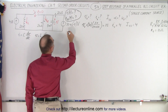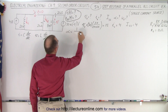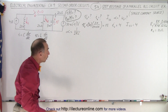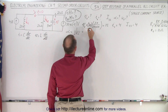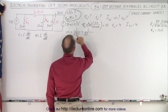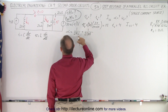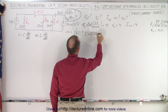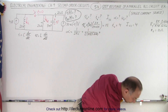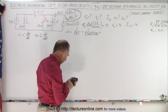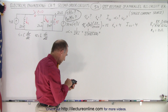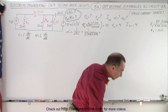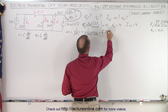Now let's find alpha. Alpha equals 1 over 2RC for a parallel RCL circuit. So that's equal to 1 over 2 times the total resistance of 10 ohms, and the capacitance is 8 millifarads, or 0.008. That gives us 1 divided by 0.008 times 20, and we get 6.25.